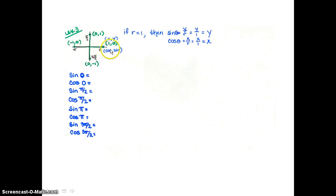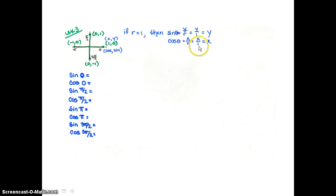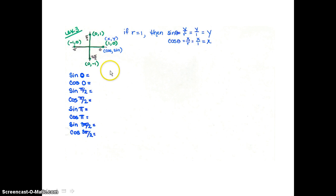Because this is a unit circle with a radius of one, sine is y over r and r is one, so sine is just the y value. Cosine is x over r and r is one, so cosine is just the x value. Looking at the ordered pair at zero, that's one, zero — so sine at zero is the y value, which is zero, and cosine at zero is the x value, which is one.